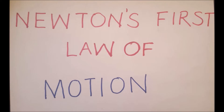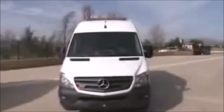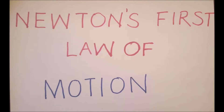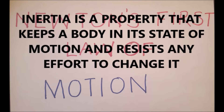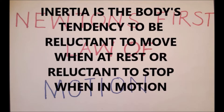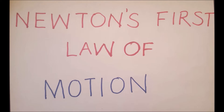Inertia can be described as the body's tendency to be reluctant to move when at rest, or reluctant to stop when in motion. Referring back to our illustration, when the car stopped immediately, you as the person in the car were reluctant to stop — that is why, much as the car stopped, the body that was also moving along with the car continued moving forward. So inertia is the property that keeps a body in its state of motion and resists any effort to change it.